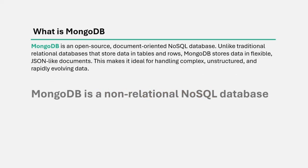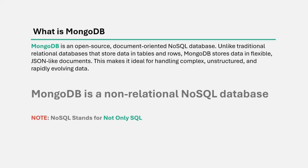MongoDB is a non-relational NoSQL database solution provided by a company which is also known as MongoDB. Apart from MongoDB database, the MongoDB company also provides other solutions like a cloud-based database service, as well as tools to connect to and work with MongoDB database, including Mongo shell, Compass, etc. Coming to the definition of MongoDB, it is a non-relational NoSQL database solution. Remember that NoSQL stands for 'not only SQL' — beginners sometimes get confused and think NoSQL means no SQL, but it stands for not only SQL.